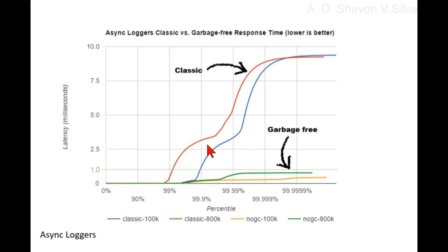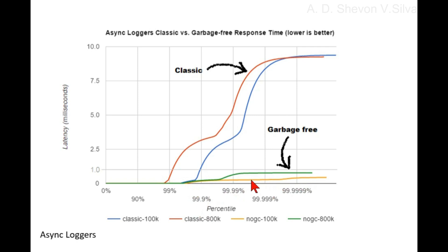Here you can see async logger classic versus garbage-free response time — lower is better. Here is classic 100k, here is classic 800k, here is no-GC 100k, here is no-GC 800k. On the axes: percentile and latency in seconds. Here you can see the classic results and here the garbage-free results.